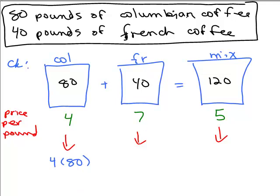And for the French, it would be 7 per pound, 40. And for the mixed, it was 5 times 120. And this should come up to being equal, right? That's one way of noticing it. That would be 120. The question is, is 120 plus 280 equal to... This was 4 times 80 is not 3. There we go, 320.